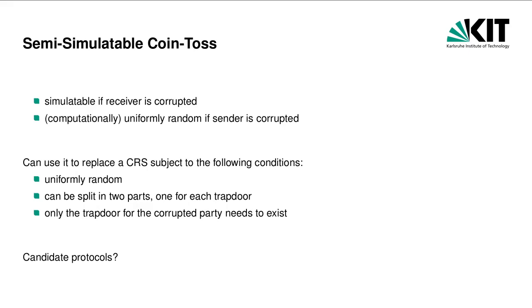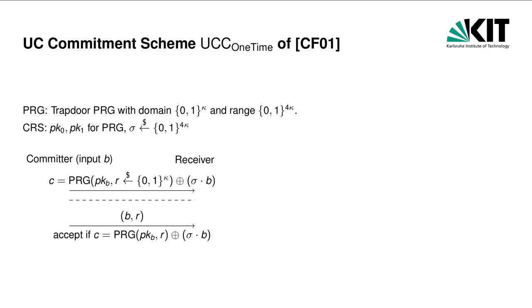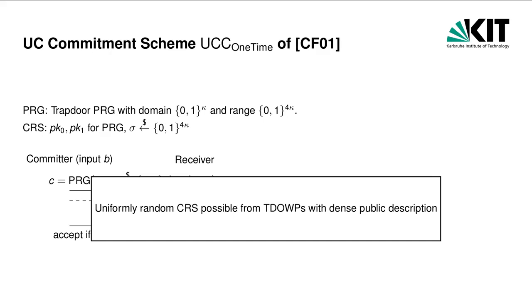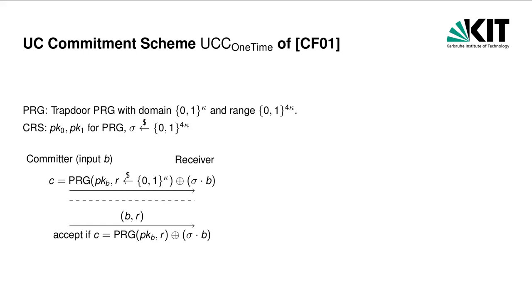We have to find a UC-secure protocol with these properties. As it turns out, the very first universally composable commitment scheme, called UC-COM due to Canetti and Fischlin, has this property. The scheme assumes the existence of trapdoor pseudorandom generators, mapping random bit strings of length kappa to pseudorandom bit strings of length 4 kappa. A trapdoor PRG is like a PRG but has a trapdoor which allows efficiently recognizing the image of the PRG. The CRS of the commitment scheme consists of two public keys pk0 and pk1 of the PRG, as well as a uniformly random bit string sigma of length 4 kappa. If trapdoor one-way permutations with dense public description exist, we can construct a trapdoor PRG with uniformly random keys, resulting in a CRS that looks like a uniformly random string.